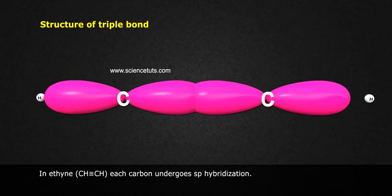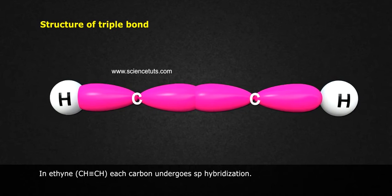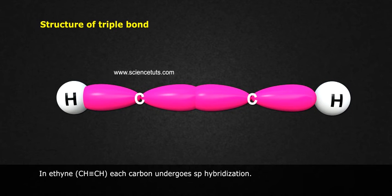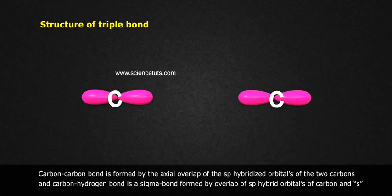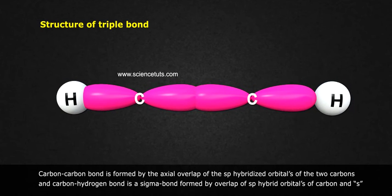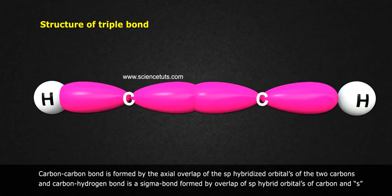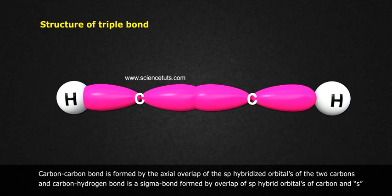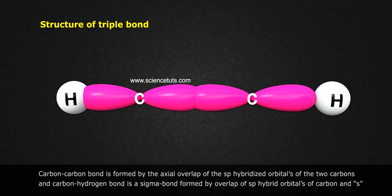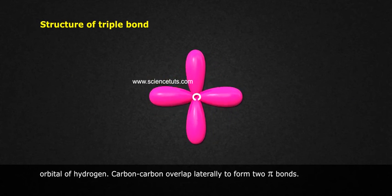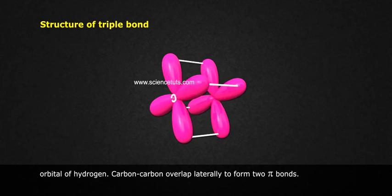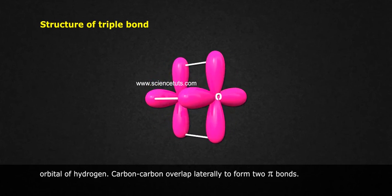Structure of the triple bond: In ethyne, CH≡CH, each carbon undergoes SP hybridization. The carbon-carbon bond is formed by axial overlap of the SP hybridized orbitals of the two carbons, and the carbon-hydrogen bond is a sigma bond formed by overlap of the SP hybrid orbital of carbon with the S orbital of hydrogen. The two unhybridized p orbitals on each carbon overlap laterally to form two pi bonds.